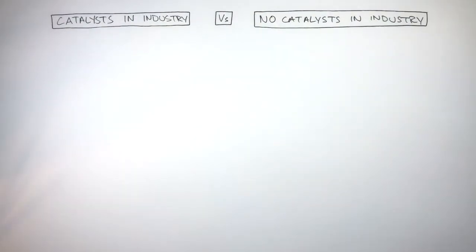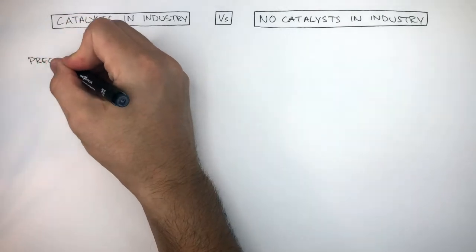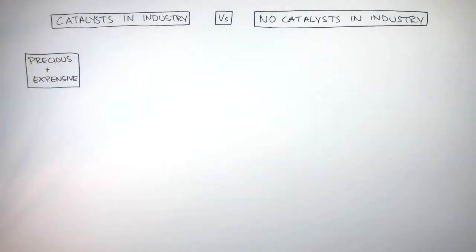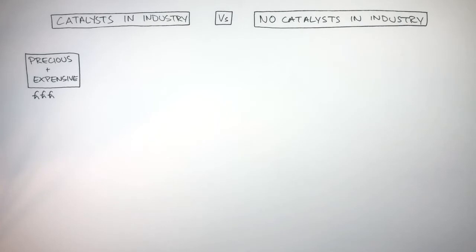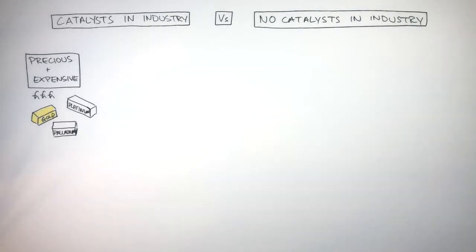Catalysts tend to be precious and expensive metals. They're rare metals which cost initially a lot of money to buy. Catalysts in industry tend to be transition metals. Examples are gold, platinum and palladium.